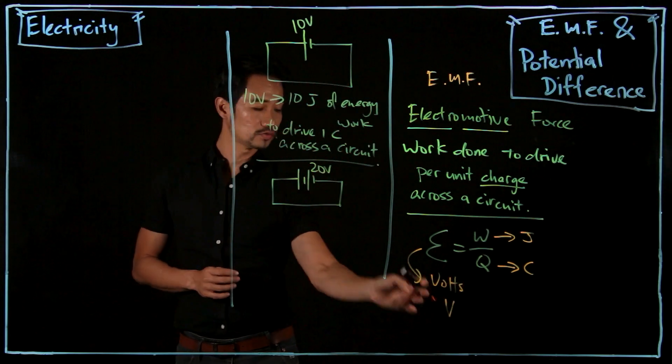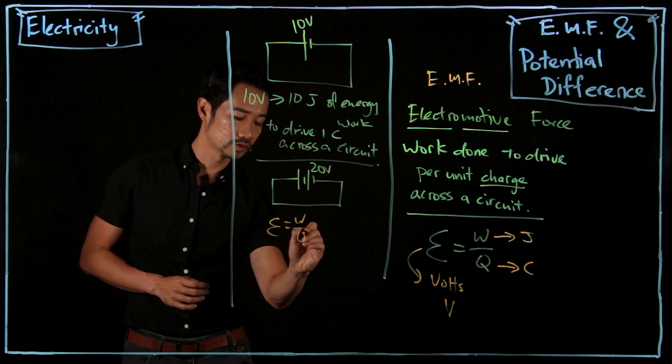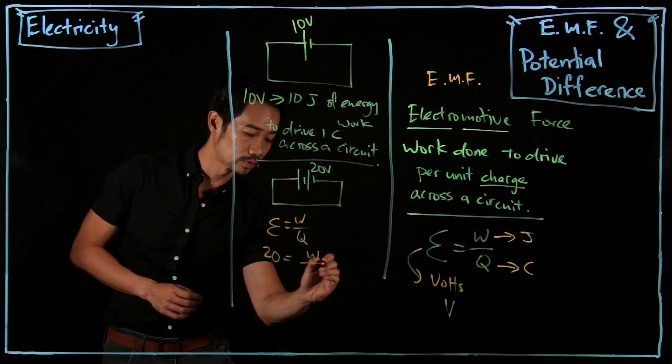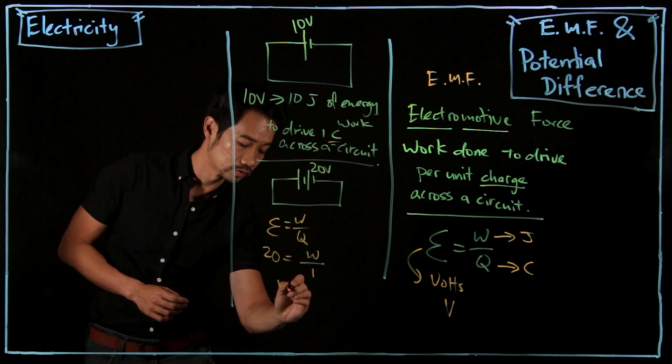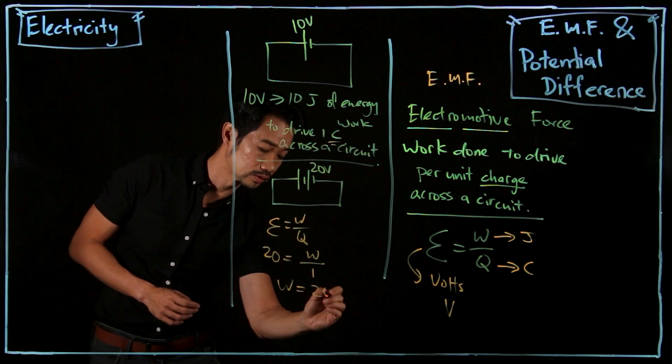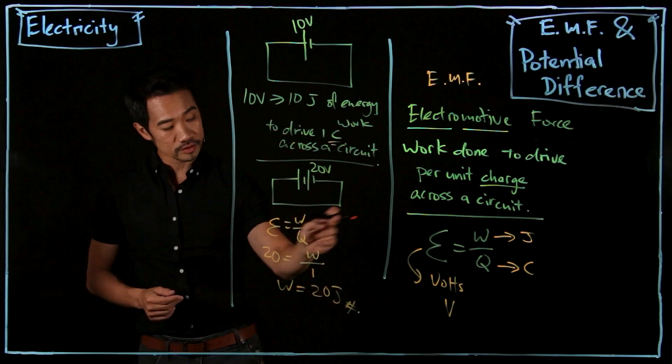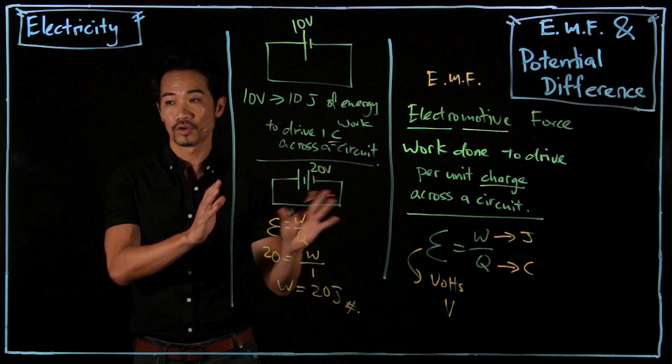So 20 volts over here—E equals W over Q. So if E is 20, W is what we want to find, Q per unit charge is 1. So W equals 20 joules. How much work is done to drive a charge across? 20 joules. So I hope you get that.